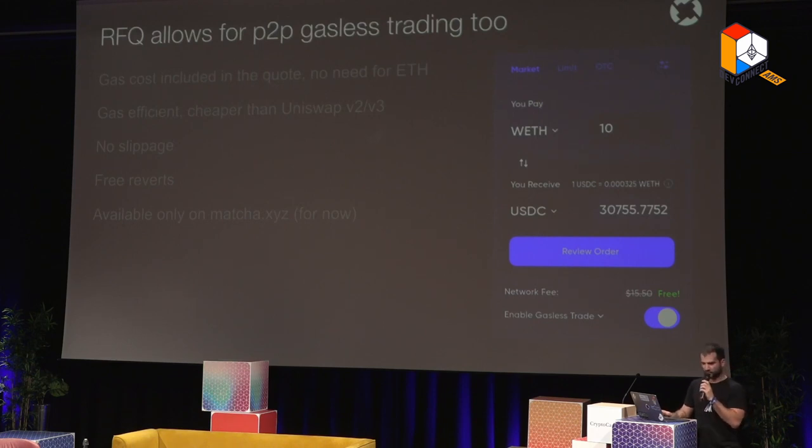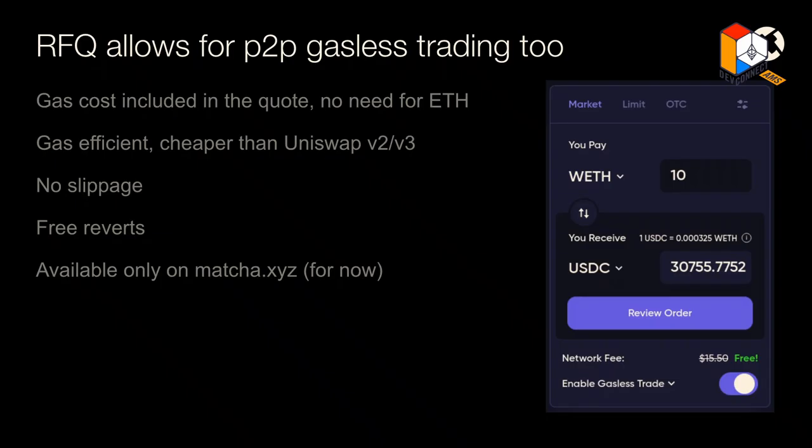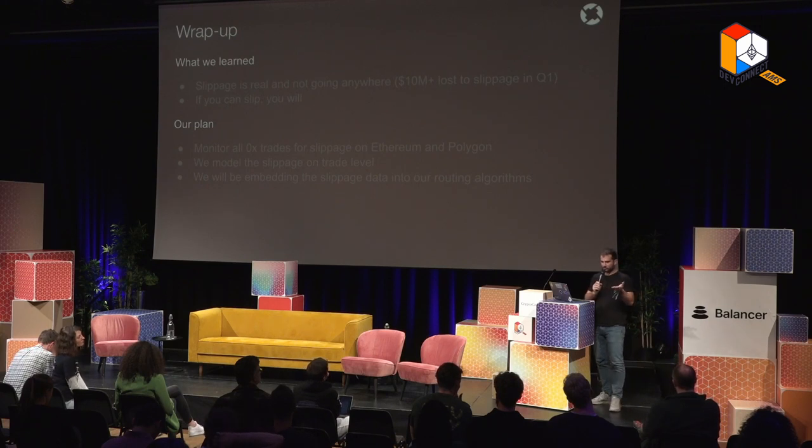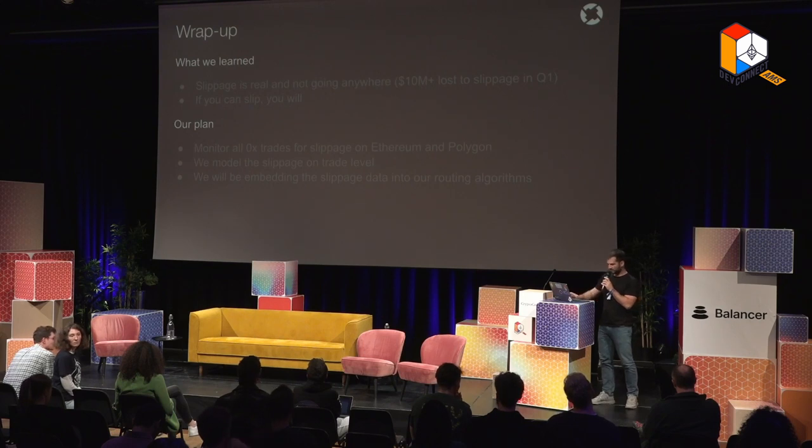RFQ also allows for peer-to-peer gasless trading, currently available on Matcha, embedding gas costs into the quoted price with no slippage and no reverts. To wrap up: slippage is real, it's hidden from users, and it's not going away. We calculated over $10 million lost in slippage by users in Q1 of this year. If your trade can slip, bots will take advantage of it. Our plan is to monitor this data on an ongoing basis across Ethereum, Polygon, and other chains, and model slippage prior to the trade to improve routing and get users a better price.